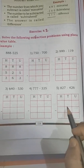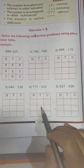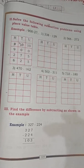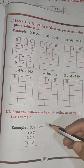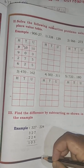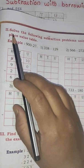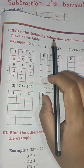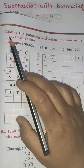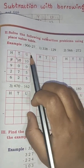We only have to try to solve the three remaining sums. Now open page number 115. Solve the following subtraction problems using the place value table.